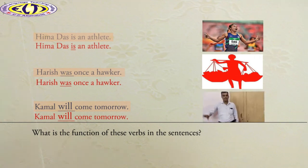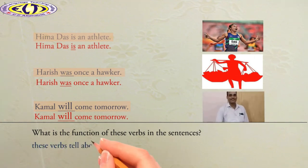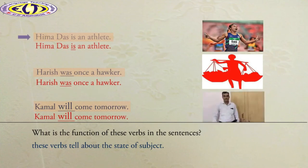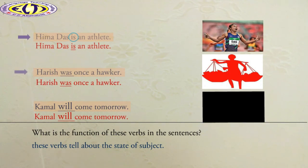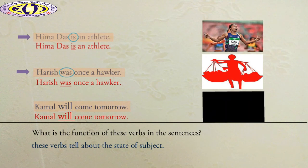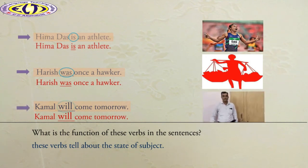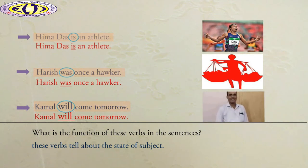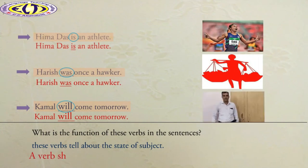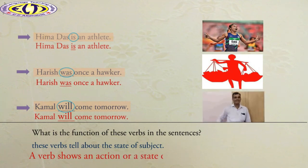In these sentences, these verbs tell about the state of the subject. In the first sentence, the verb 'is' tells about the present state of Himadas. In the next sentence, the verb 'was' tells about the past state of Harish. And similarly, in the last sentence, the verb 'will' tells about the future state of Kamal. Therefore, we can clarify again that a verb shows an action or a state of being.